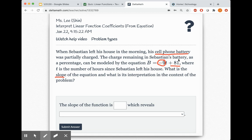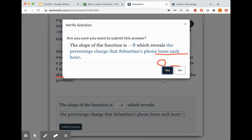And then what does that 81 mean? 81 means originally when he left his house, his cell phone was at 81%. And then each hour that he's outside, it is dropping by 9%. So we can go ahead and write that. Slope is negative 9, which reveals, here it is, the percentage charge that Sebastian's phone loses each hour. That will be your answer.